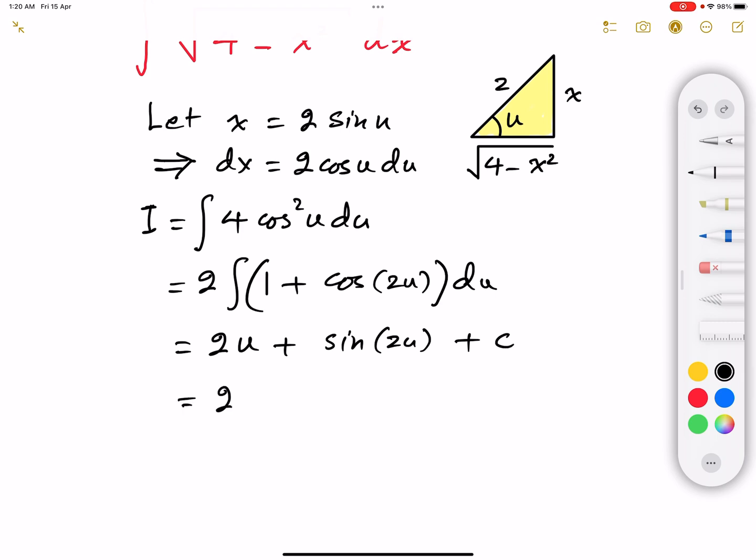And this can be rewritten as 2u plus 2 sine u cosine u plus c. And from the right angle that we have drawn above there, we can re-express the final answer in terms of x. So u basically is the sine inverse of x divided by 2. So that's going to give us twice sine inverse of x divided by 2.